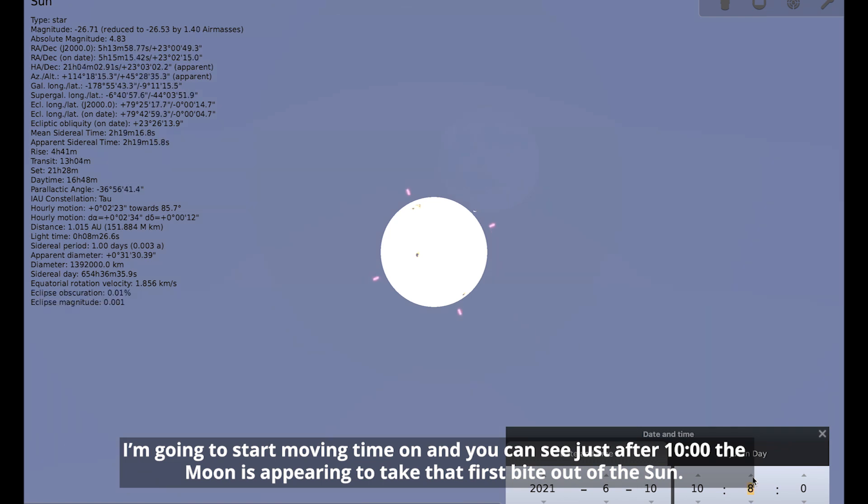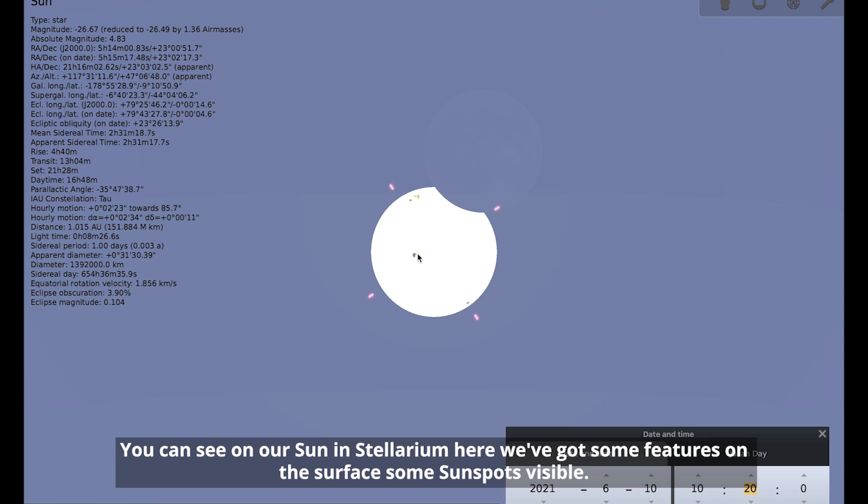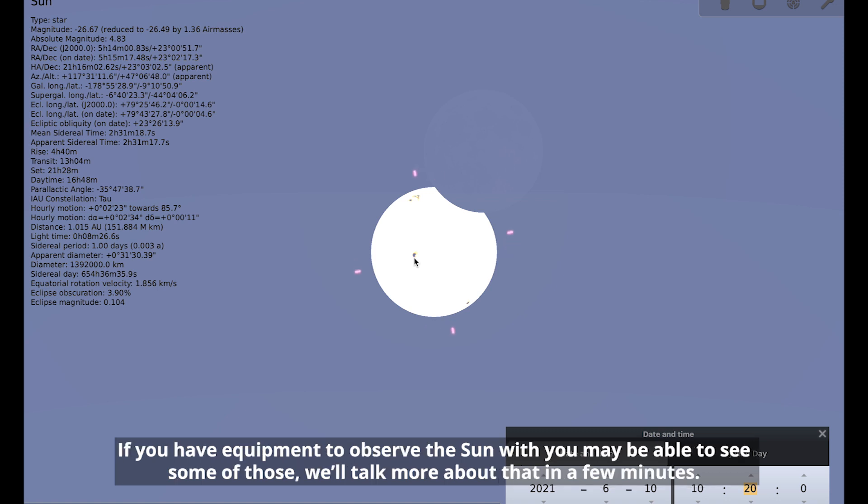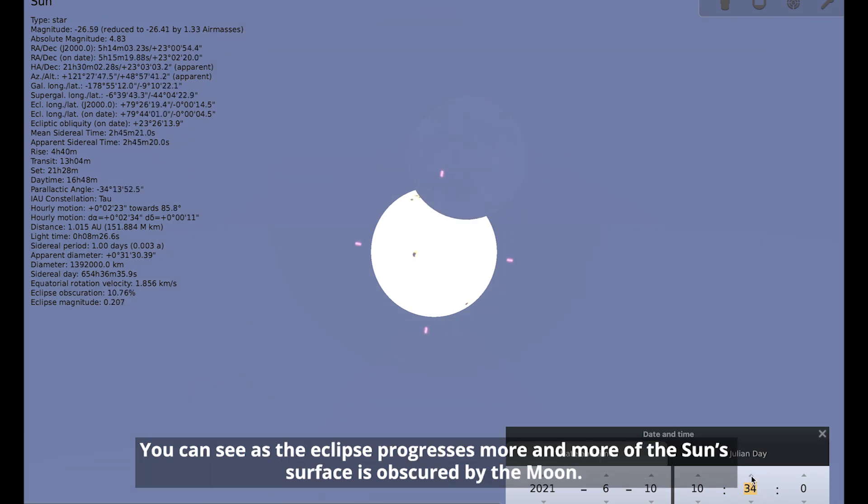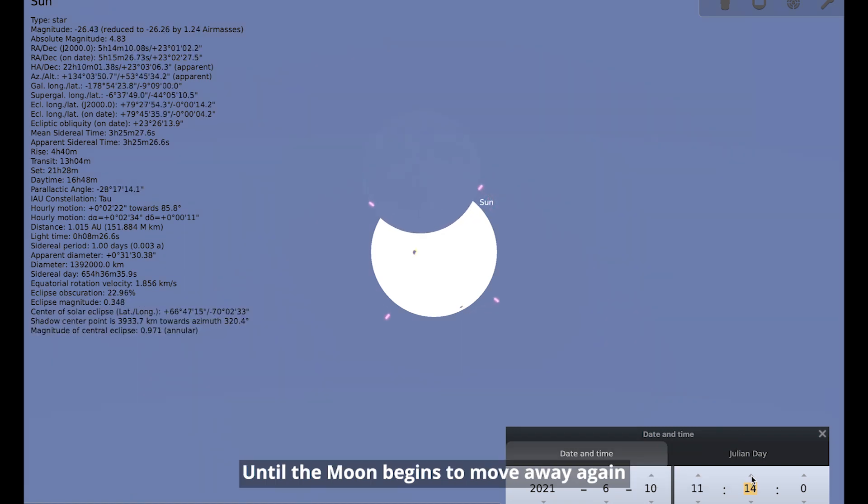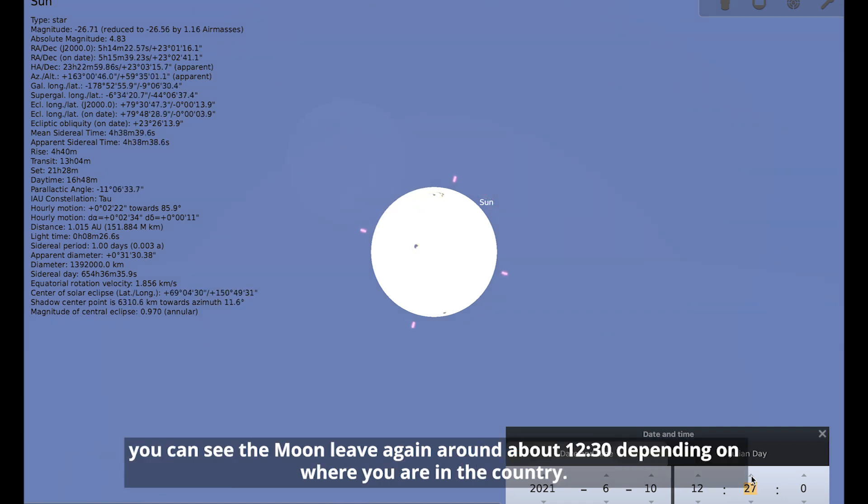So I am going to start moving time on and you can see just after 10 o'clock, the moon is appearing to take that first bite out of the sun. You can see on our sun in Stellarium here, we've got some features on the surface. We've got some sunspots visible. If you have equipment to observe the sun, you may be able to see some of those. And you can see as the eclipse progresses, more and more of the sun's surface is obscured by the moon until the moon begins to move away again. As we approach midday and past midday, you can see that the moon will leave again around about half past 12.